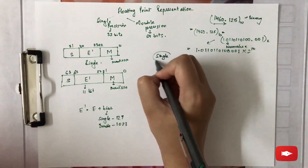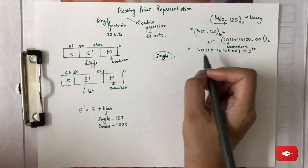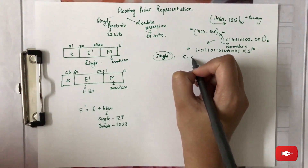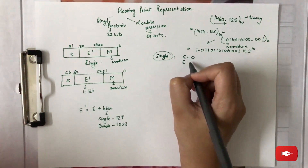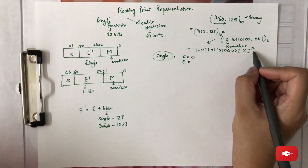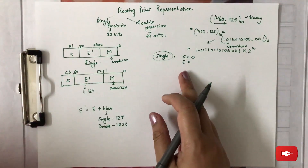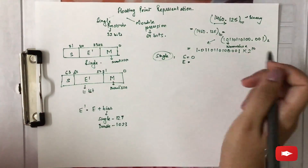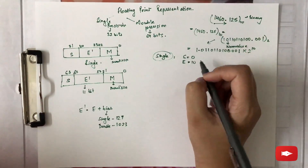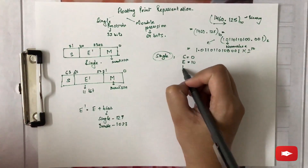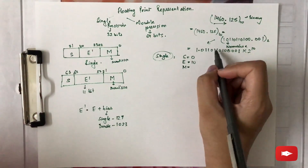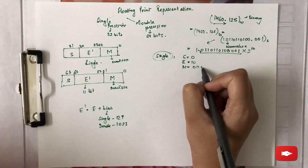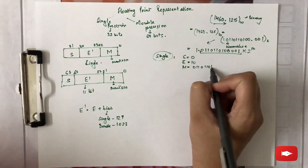Now let's begin the process for single precision. Because this number is positive, S will be 0. The exponent part e (not e-dash) is 10. The mantissa is the part after the decimal point, that is 0110110100001...